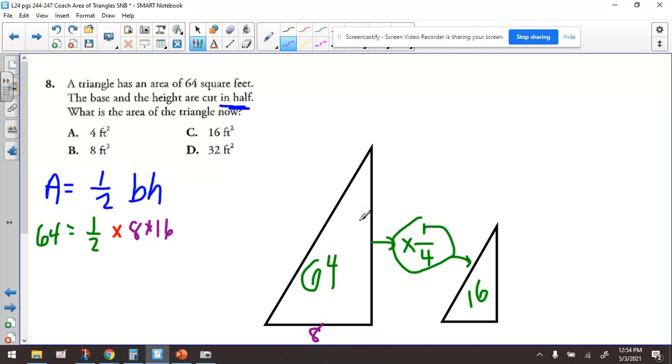So if the dimensions on this thing are 8 and 16, and we take half of these purple numbers, because it does say cut in half, right? So half of this would be 8, and half of this would be 4.